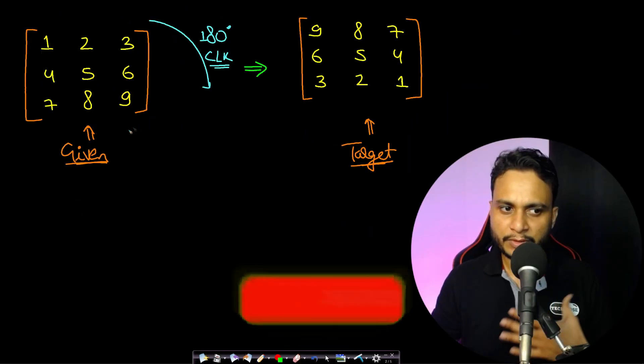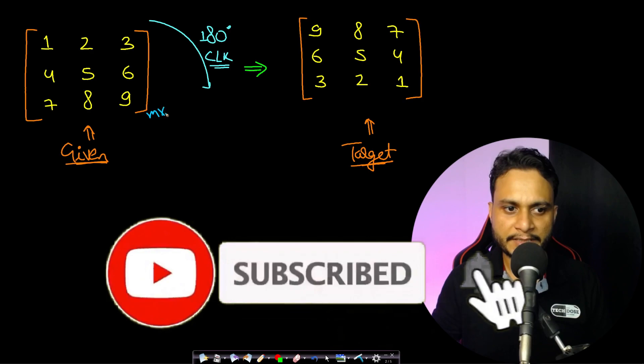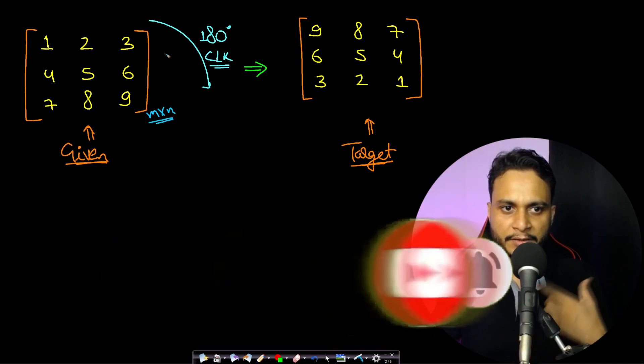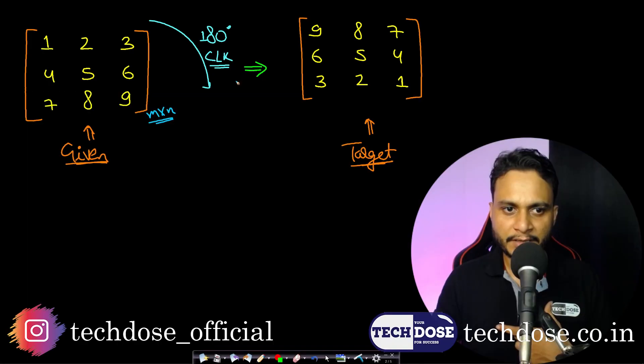Now let us look at the problem statement. In this problem, given a 2D matrix of size m by n where m is the number of rows and n is the number of columns, if you rotate it by 180 degrees in the clockwise direction, then this is your expected array which is the target array. Now in this case I have taken a square matrix but even if it is a rectangular matrix your technique should work fine.